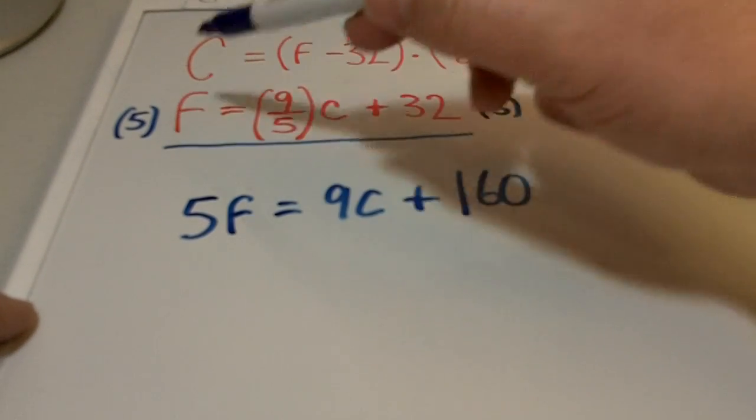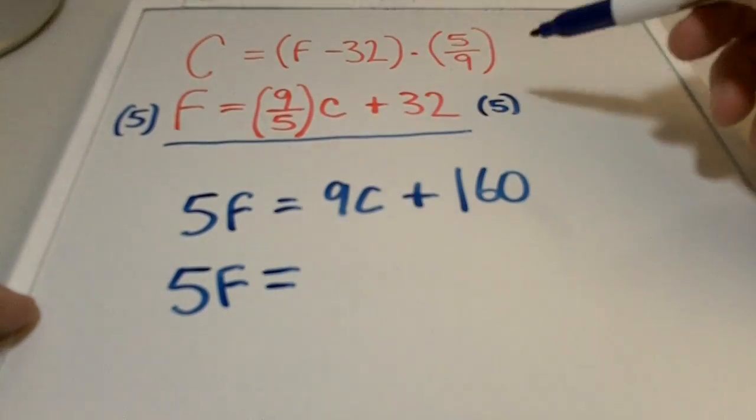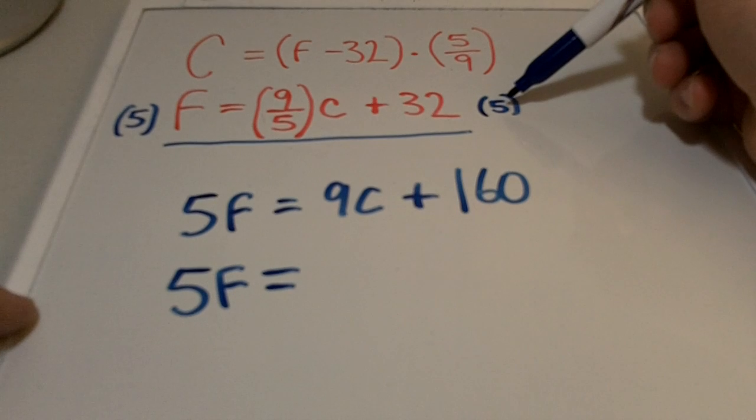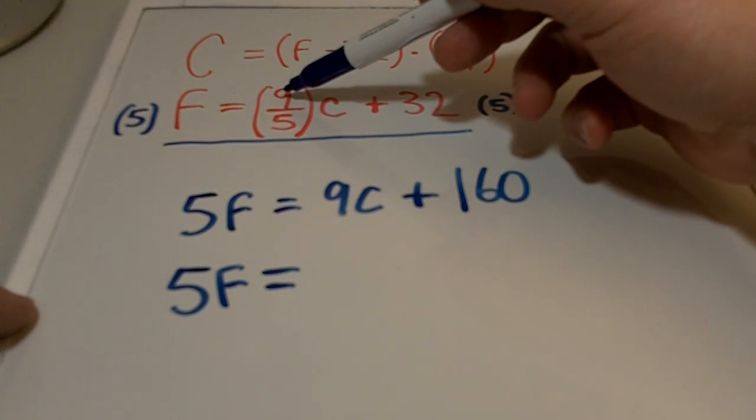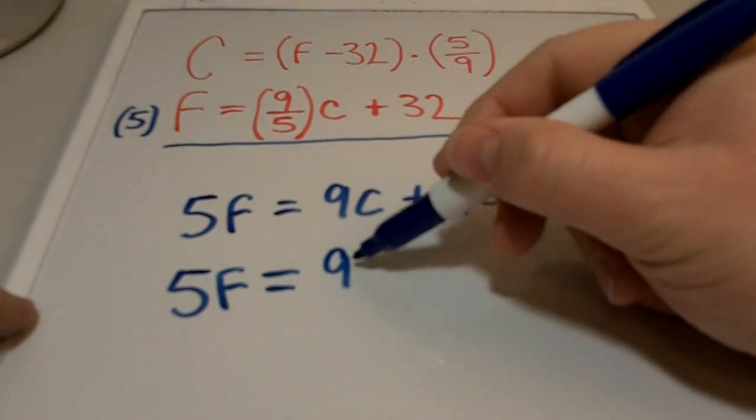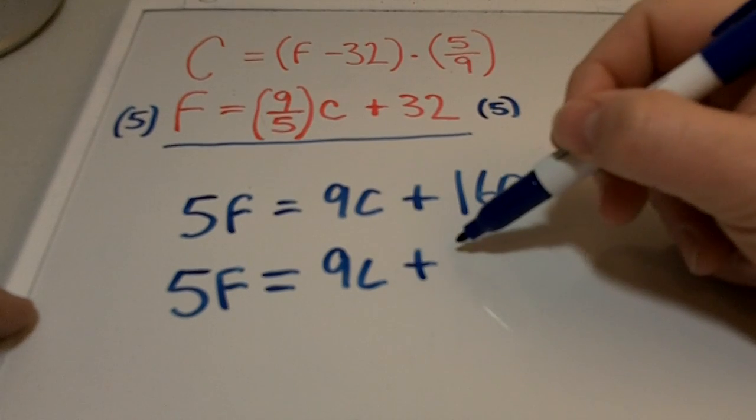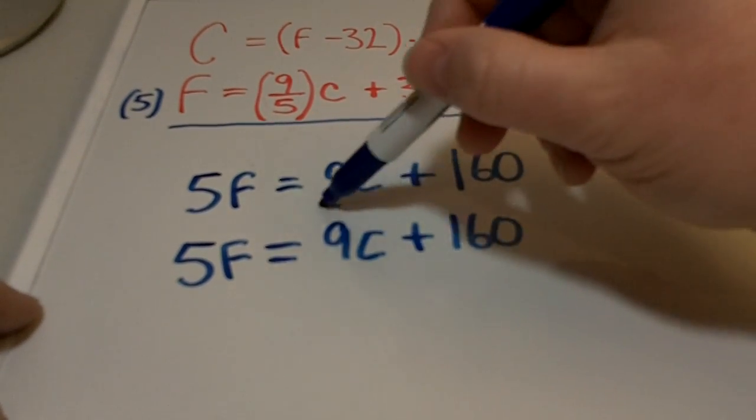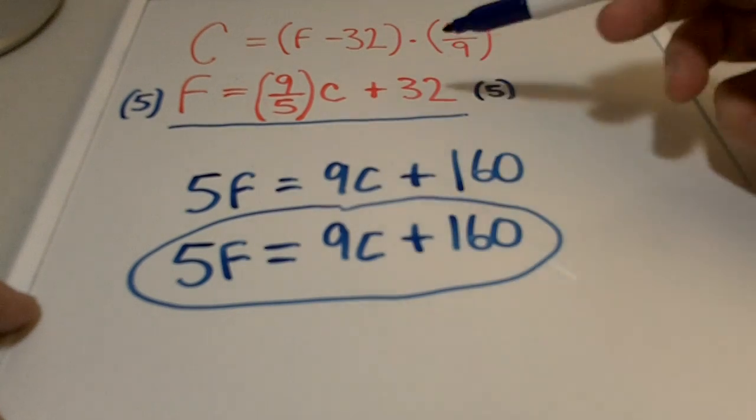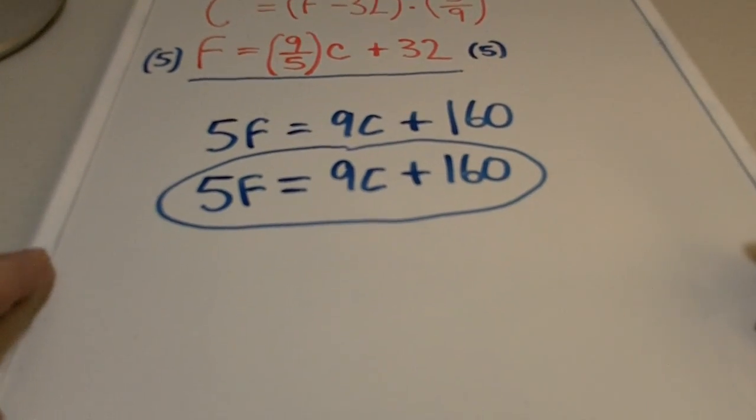When we do it on this side, we get 5F. Then on this side, when we multiply 5 by 9/5, we get 9, and then multiply that by C to get 9C. And then over here, 5 times 32 is 160. So as you can see, the shortcut is basically just this formula here.